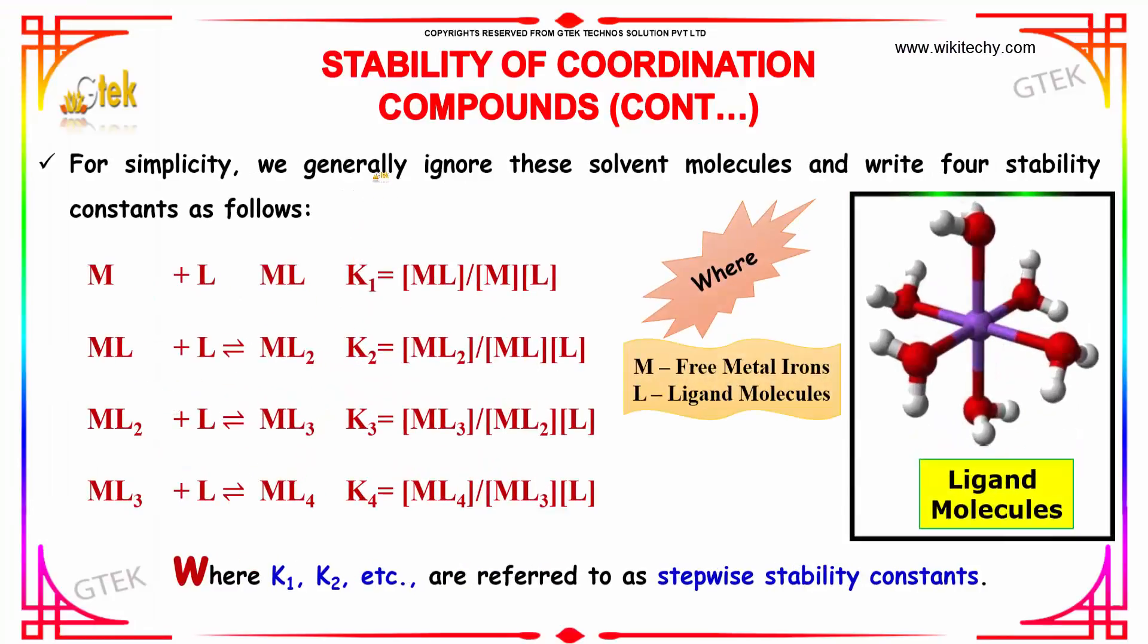For simplicity, you generally ignore the solvent molecules and write 4 stability constants. M with one ligand will form ML. ML with one ligand will form ML2. ML2 with one ligand will form ML3. ML3 with one ligand will form ML4.